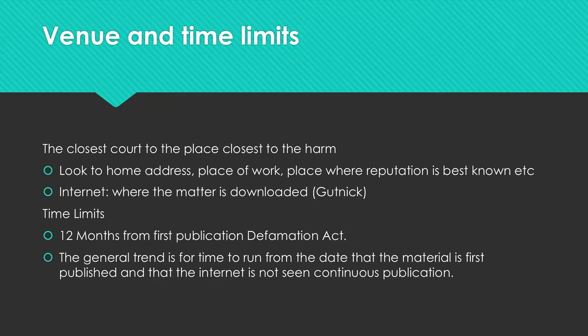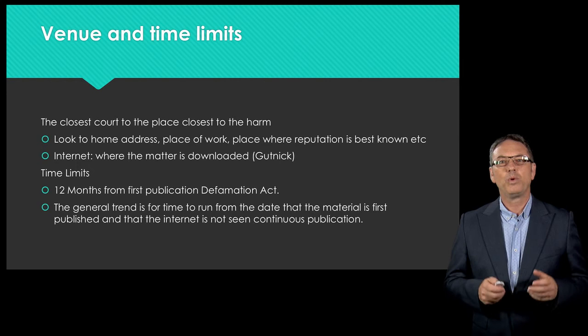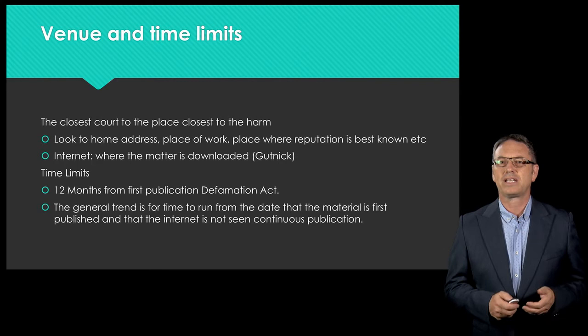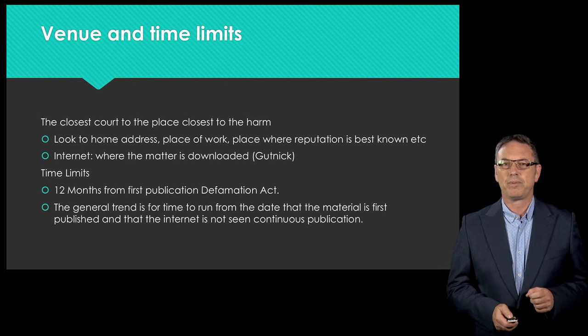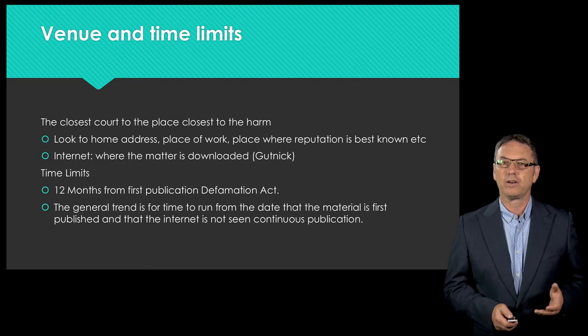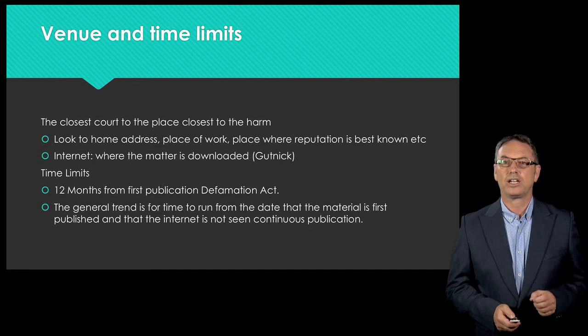If an individual has been defamed they have 12 months to commence legal proceedings from the date of first publication. Commencing court proceedings outside this time limit is restricted. We have national defamation laws in Australia, so there are many federal and state jurisdictions available, but most people choose the court nearest to them because that is where their reputation is most likely to be harmed. Some litigants choose the federal court because their case will be heard by a judge only, without a jury, believing their case will be enhanced without a jury trial.